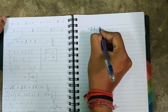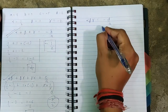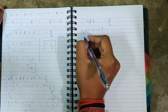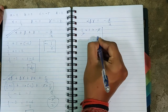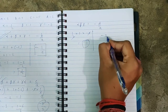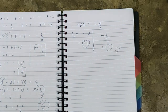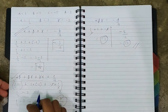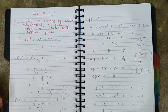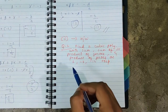Now the last relationship: αβγ = −d/a. LHS: (1/2)(1)(−2) = −1. RHS: −d/a = −2/2 = −1. All three relationships have been verified. This question is a bit lengthy but simple, and such questions can come in exams.